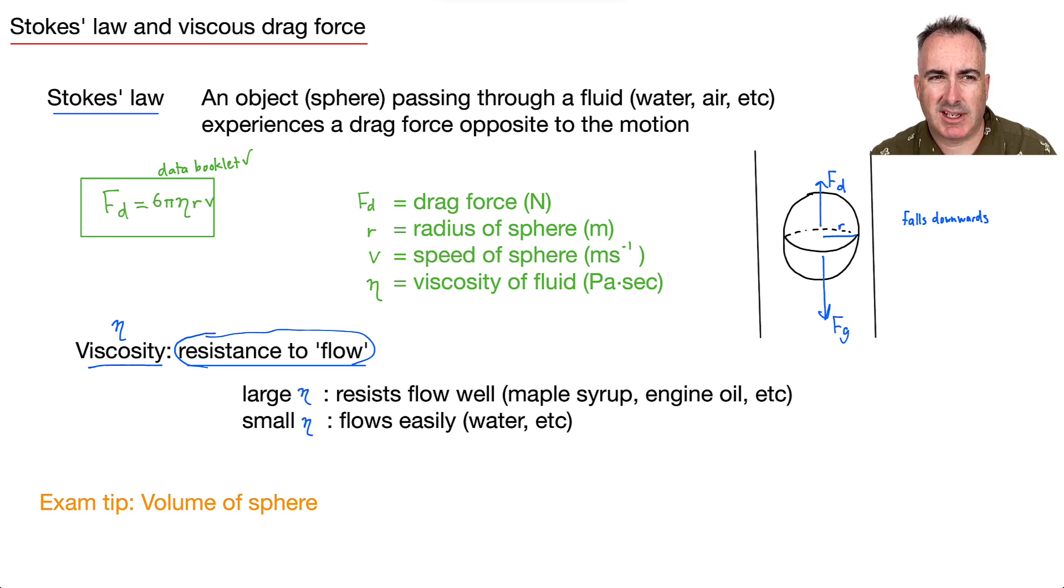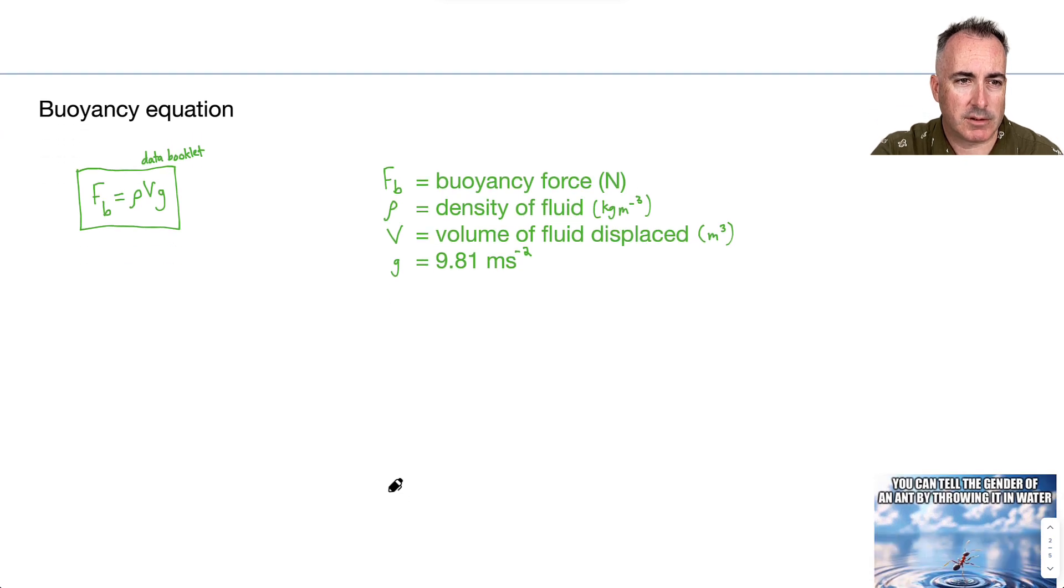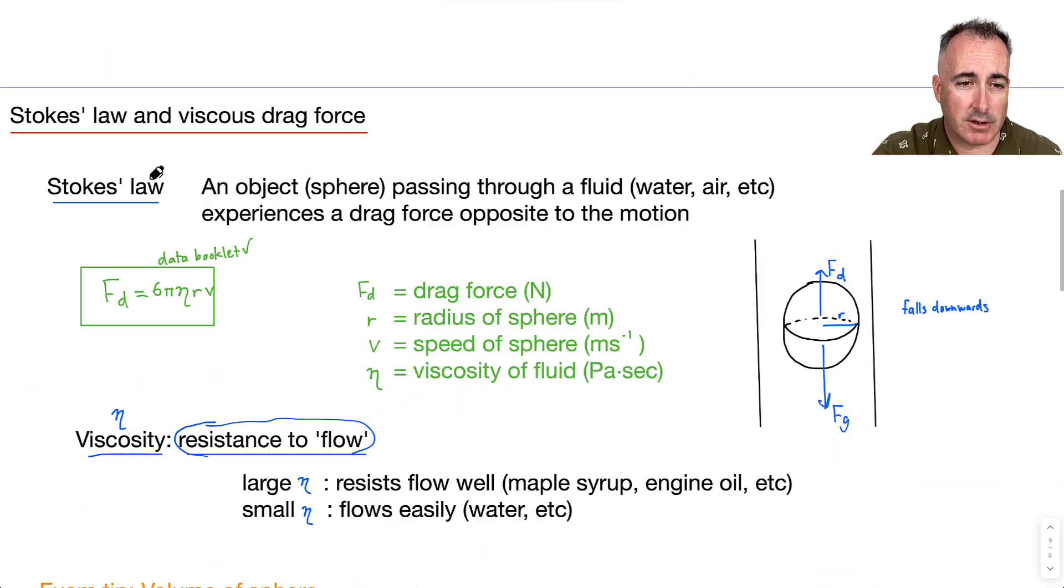When we're dealing especially with the buoyancy force, if we need to know the volume of a sphere, it's actually in your data booklet. The volume of a sphere—that's not this V here, that's a different V—is four-thirds pi r cubed. That's important in case you need it, especially when talking about volume of something that's being displaced. If it's a sphere, then that volume of fluid displaced is related to the volume of a sphere.